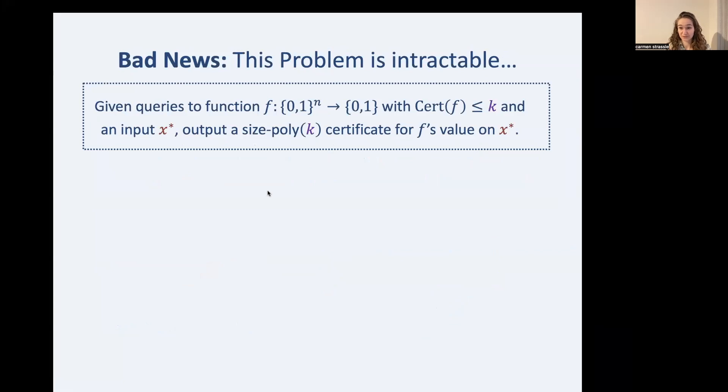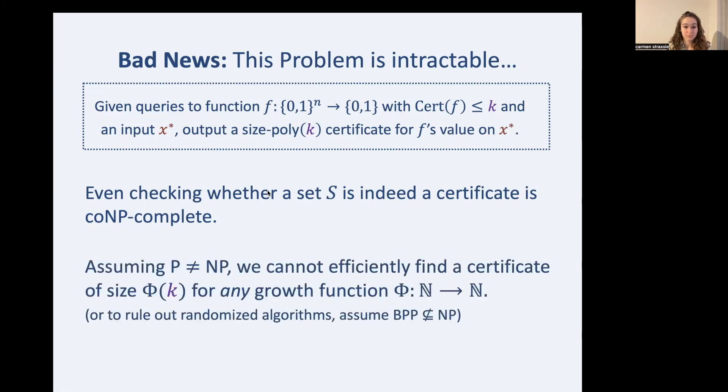So the bad news first. Even checking whether a set S is indeed a certificate is co-NP complete. So say that you've been able to solve our algorithmic problem, and you said yes, I have this poly k certificate for f's value on x star. Even checking whether or not you've actually solved the problem is co-NP complete. Also, assuming P is not equal to NP, we cannot efficiently find a certificate of size Phi of k for any growth function Phi. So forget poly k. Think of Phi as 2 to the k to the k to the k. No matter how rapidly Phi grows with k, we still can't find a certificate of that size.